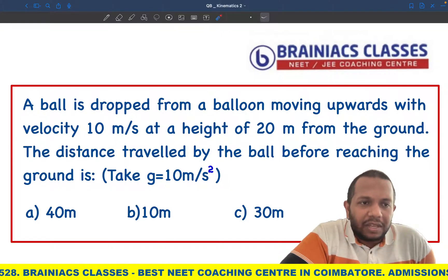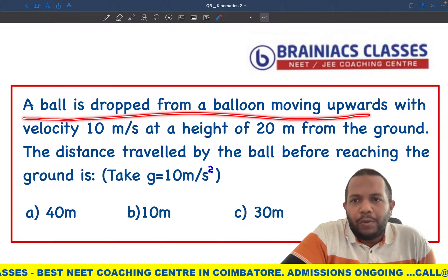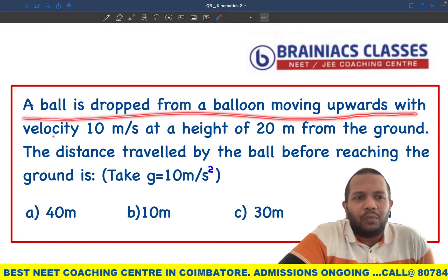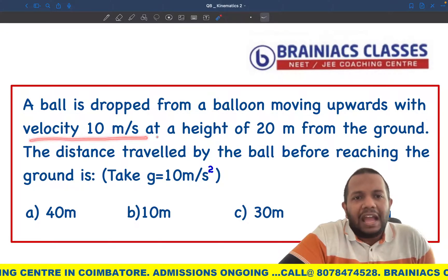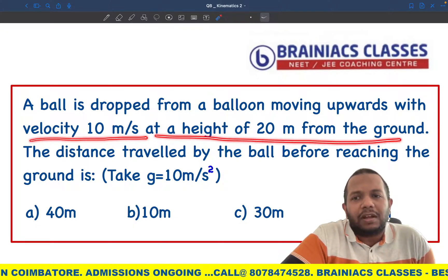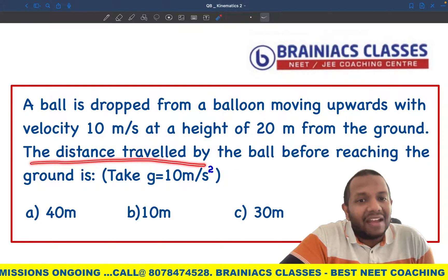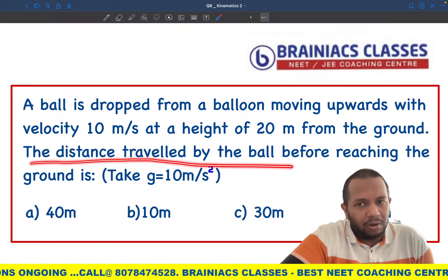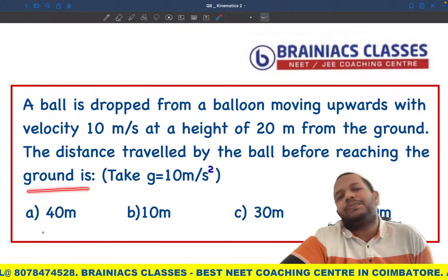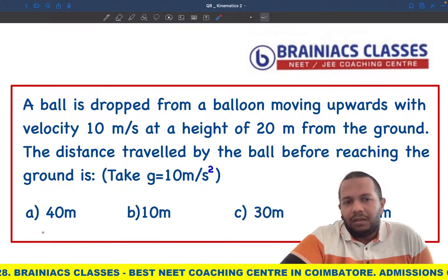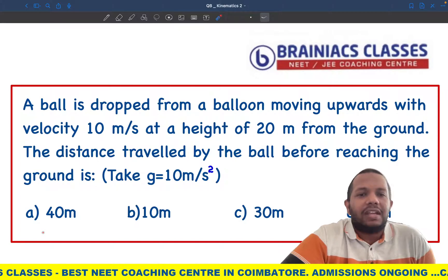So the question: a ball is dropped from a balloon moving upwards with a velocity of 10 meters per second, at a height of 20 meters from the ground. The distance traveled by the ball before reaching the ground is what we need to find. We'll understand the question first, then solve it.